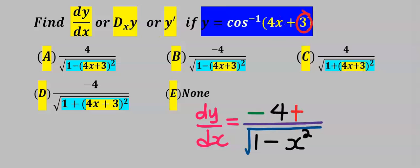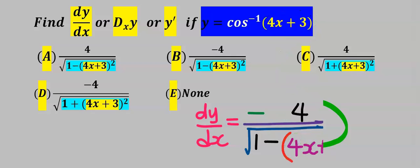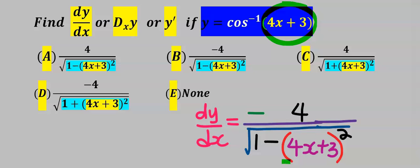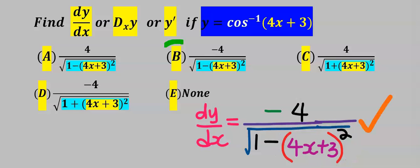Differentiating 3 gives zero, so we leave the zero out. Next, in the place of x we replace it with 4x plus 3. This is simplified — do not expand the bracket. This becomes our dy/dx. From the options, our answer is B.